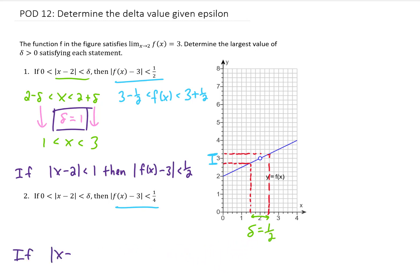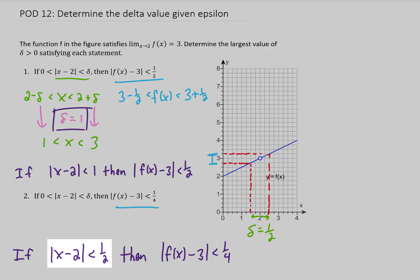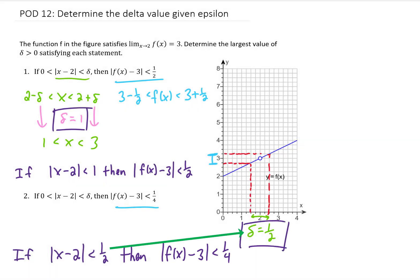That immediately tells us that our value for delta needs to be 1 half. And let's write out that sentence one more time. This sentence says that if our value of x stays within a distance of 1 half from the value 2, then our y value is going to stay within a distance of 1 fourth from the value 3. Again, that just means that the answer to this problem is delta equals 1 half.